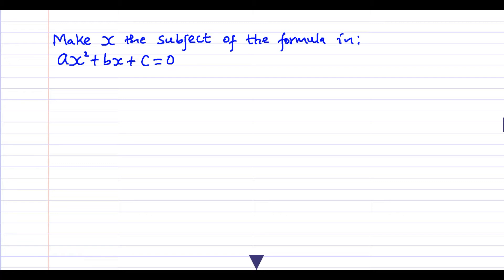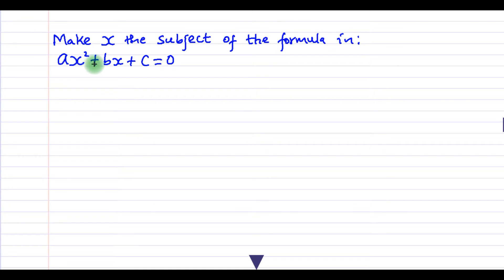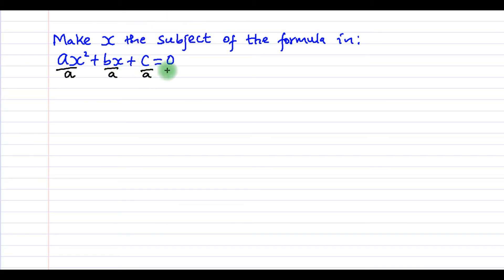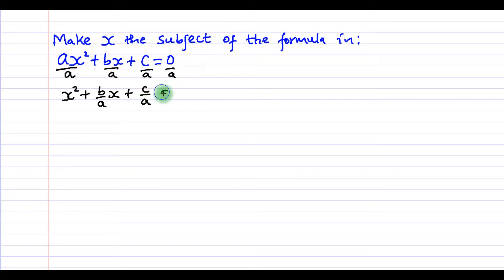Welcome, dear students. Today we are going to look at this question: make x the subject of the formula in ax squared plus bx plus c equals zero. This is actually a quadratic equation, so we need to use the completing the square method to make x the subject, with x written in terms of a, b, and c. We divide through by a to make the coefficient of x squared equal to one, giving us x squared plus b over a times x plus c over a equals zero.